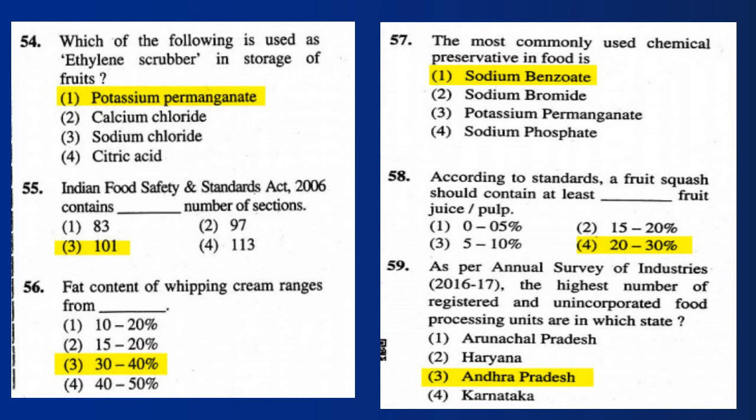Question 55: The Indian Food Safety and Standards Act 2006 contains 101 sections. Question 56: Fat content of whipping cream ranges from 30 to 40%. Question 57: The most commonly used chemical preservative in food is sodium benzoate. Question 58: According to standards, a fruit squash should contain at least 20 to 30% fruit juice or pulp.